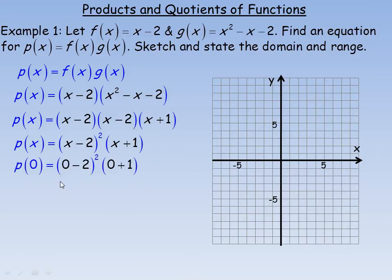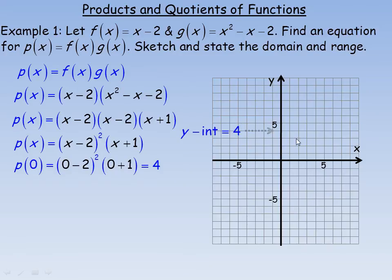Another characteristic useful for sketching is the y-intercept, found by substituting 0 for x. So we get 0 minus 2 squared times 0 plus 1, which is negative 2 squared times 1, equaling 4. So the y-intercept is at 4, meaning the graph passes through the y-axis at 4.